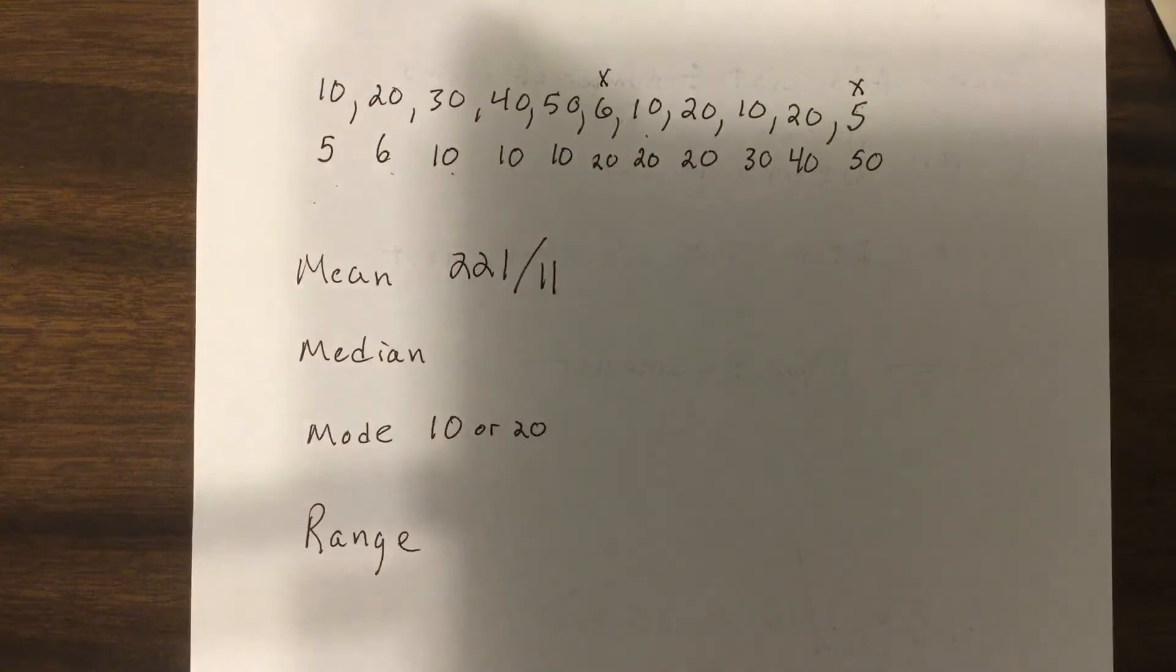So, 221 on my old broken calculator divided by 11. Oh, it's not working. It says it's 20.09. I'm gonna round it to that.